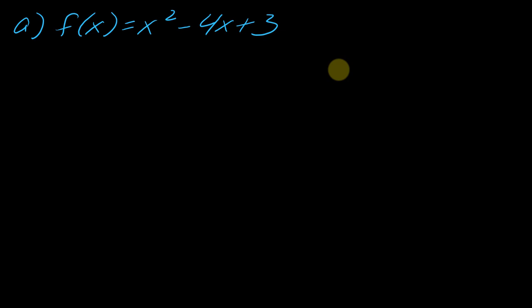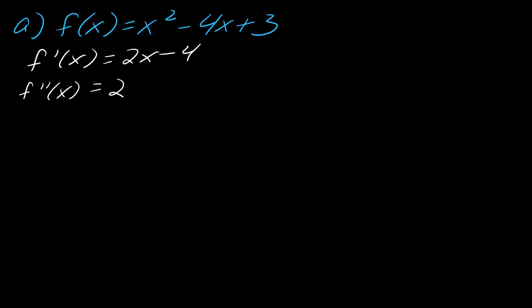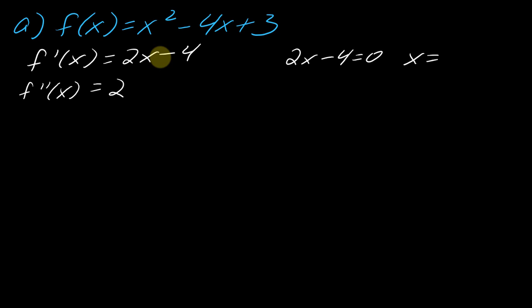For this first example, find the first and second derivative — pause the video and try it. The first and second derivatives are computed, and since this is a polynomial the first derivative is never undefined, so I set it equal to zero. Solving gives a critical point at x equals 2.